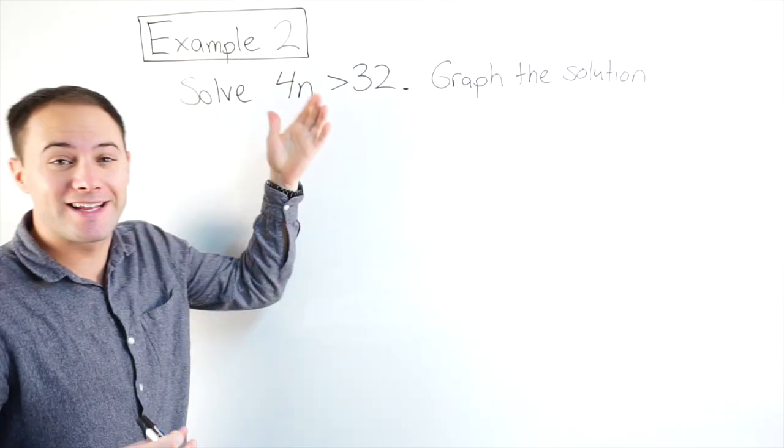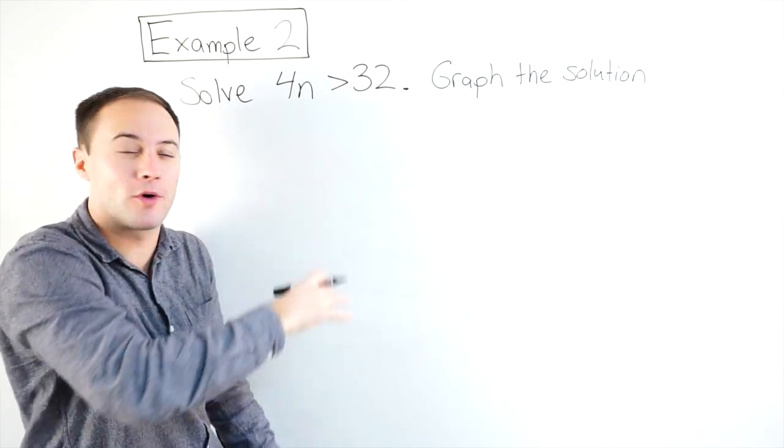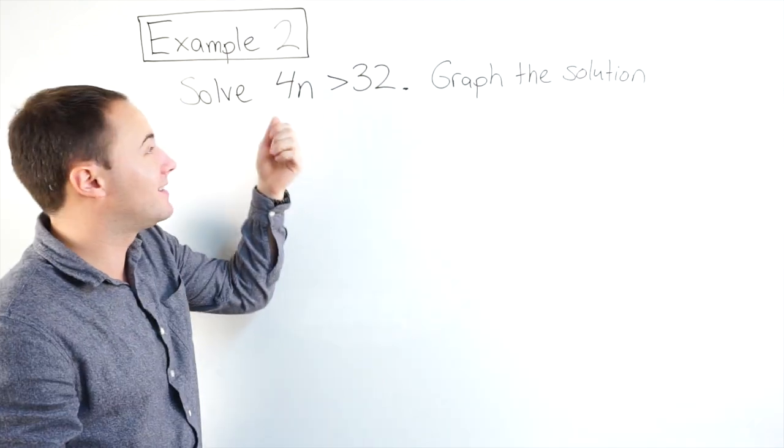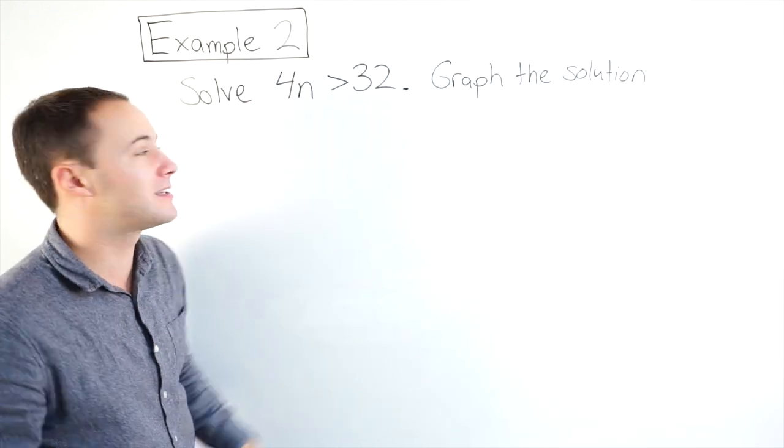So same thing, I'm trying to get the variable alone. I notice n is being multiplied by 4, so the inverse operation of multiplication is division. Dividing by 4 will undo that multiplication, and then I do the same thing here.